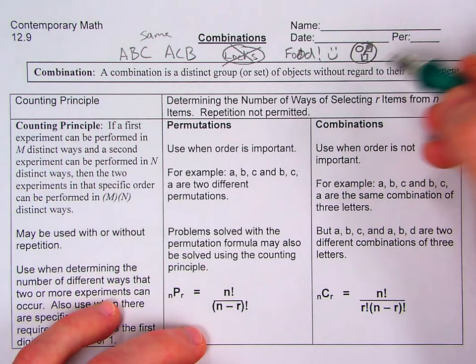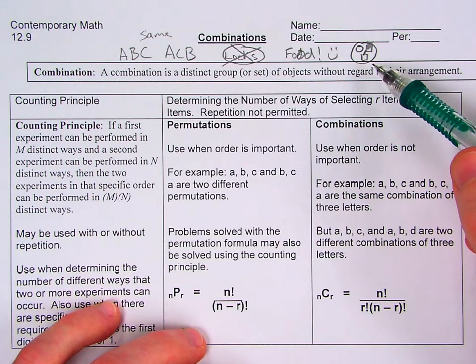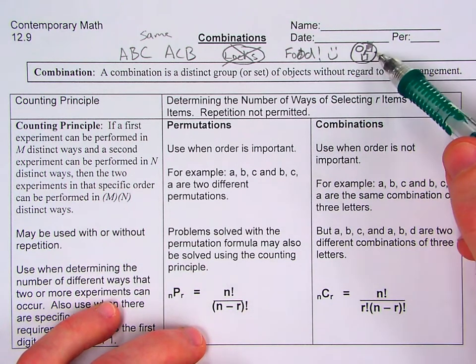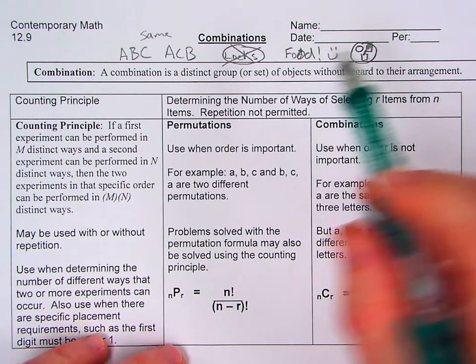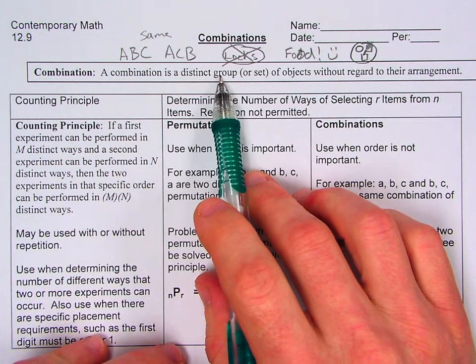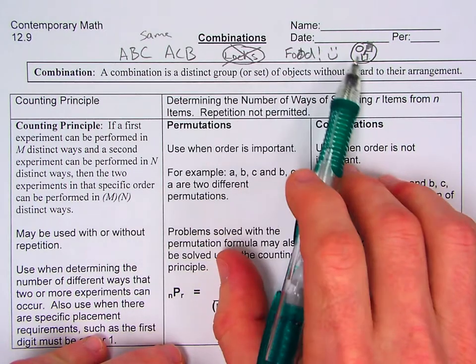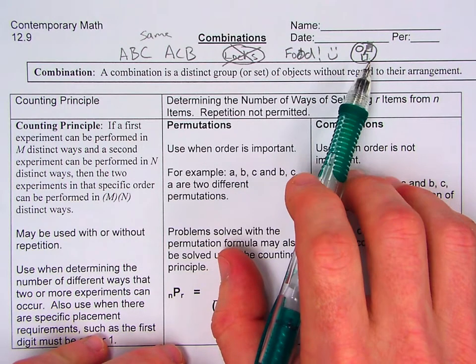Now you don't care what order those objects are on your tray. It just matters that all three of them are actually on your tray. So when we think about combinations, let's not think about combination locks, but let's think about combination plates in terms of food.